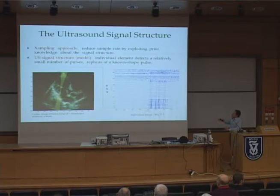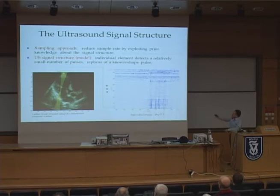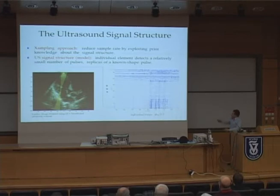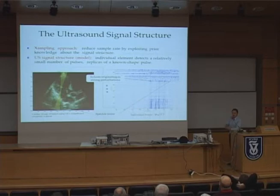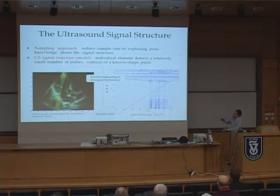The xampling approach means we can reduce the sampling rate by exploiting some knowledge about the structure of the signal. In the context of ultrasound, previous work by Tanya Chernyakova and Yonina Eldar showed that the ultrasound signal detected by each individual element can be modeled as a stream of pulses — a relatively small number of pulses corresponding to strong reflections from strong perturbations in the tissue. We also have what is known as speckle — interfering wave patterns from microscopic perturbations — but in our work we regard speckle as noise and focus on detecting the strong perturbations that give rise to strong echoes along the path of the transmitted pulse.